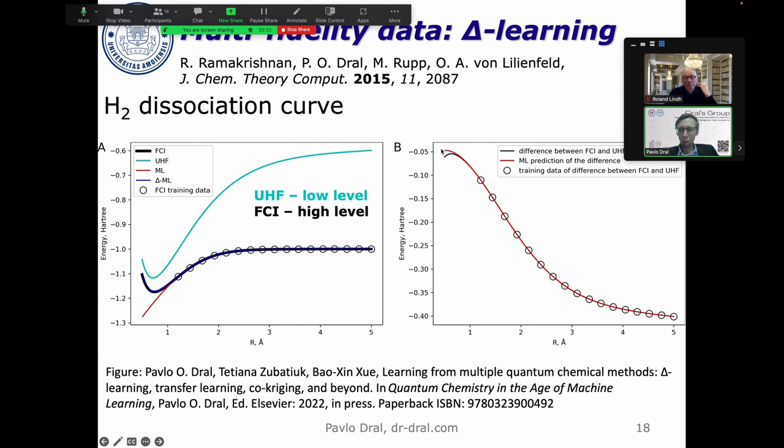UHF, although it has terrible accuracy comparable to machine learning, has correct physical behavior. Now we combine two terrible methods and get a good method by learning the difference, because the difference between UHF and full CI has much smoother behavior. It doesn't have this minimum - it just goes smoothly. Even if you train on these parts of the potential energy surface, machine learning can extrapolate to some extent and give reasonable predictions of this correction. If you put back this correction to UHF, UHF plus delta machine learning model, then you get this blue prediction which almost coincides with full CI. Very simple idea.